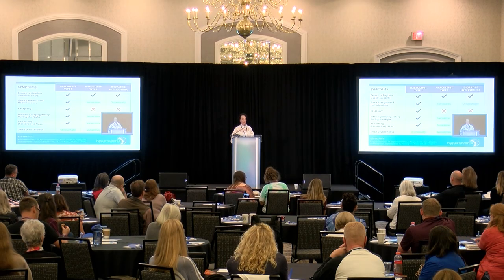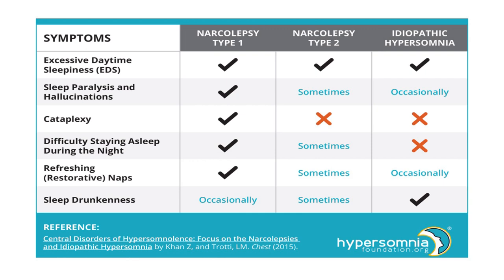We are too married to the MSLT, sleep latencies, and SOREMs. We really have to allow our patients to define the experiences they're having. When applying treatments, patients need to fully understand all the symptoms that may be present and disabling — because if we purely rely on an Epworth Sleepiness Scale or any validated scale, we may be missing the forest amongst the trees. There's a beautiful table on the Hypersomnia Foundation's website covering all these different symptoms across conditions.